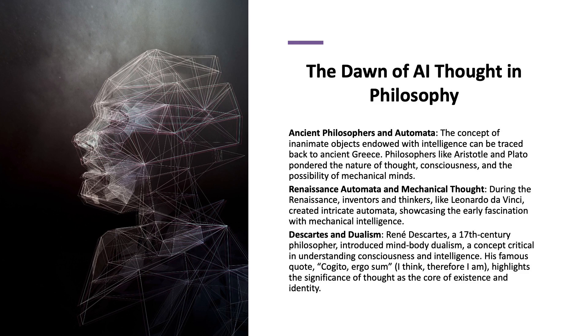The first area we'll look at is the ancient philosophers and automata. This fascination with endowing inanimate objects with intelligence has its origins in ancient Greece. Philosophers like Aristotle and Plato explored the nature of thought, consciousness, and the possibility of creating mechanical minds. Aristotle in particular pondered the nature of automata and the principles of causation and movement which can be seen as early steps towards understanding automated processes.